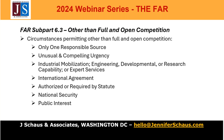Moving on to subpart 6.3 — other than full and open competition. Any procurement contract entered into without full and open competition is noncompetitive. However, not every such contract violates CICA and the FAR. CICA recognizes seven circumstances where agencies can use other than competitive procedures. These exceptions cover situations where competition is not possible or where the government values other objectives more highly. However, CICA's exceptions do not grant agencies unfettered discretion, and the FAR includes requirements agencies must meet when using other than full and open competition.